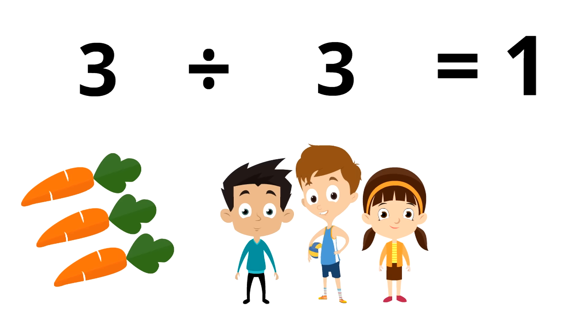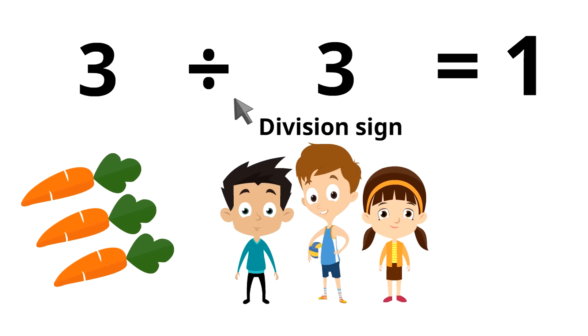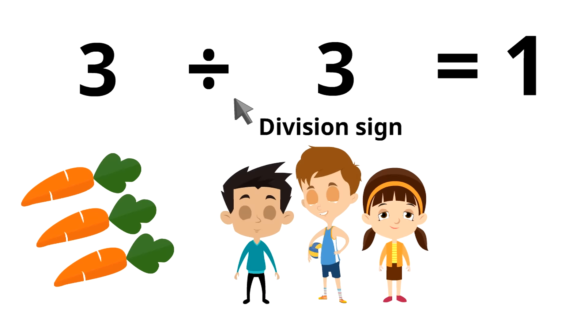Notice right here is the division sign — this is what it looks like. When you see that sign you can just say 'divided by.' So this reads: three divided by three equals one.